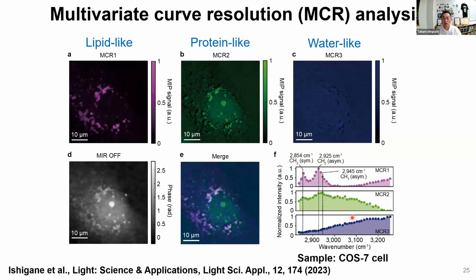We can also get hyperspectral images by scanning the IR wavelength to acquire a spectrum. The multivariate curve resolution analysis gives three components: lipid-like, protein-like, and water-like components.